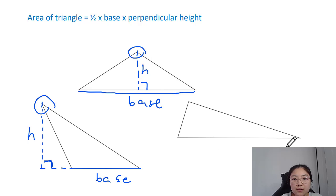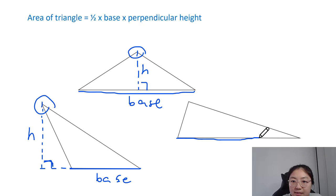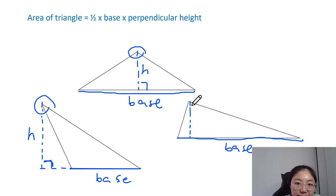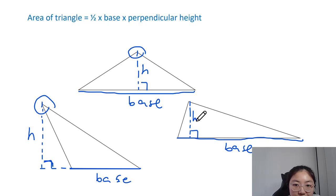For the last example, we have the base and the height — it is simply the line that connects the opposite vertex and reaches the base at 90 degrees.